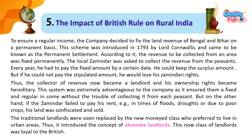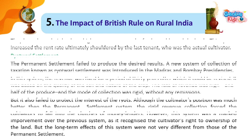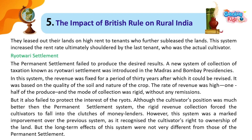But on the other hand, if the zamindar failed to pay his rent — for example, in times of floods, droughts, or due to poor crops — his land was confiscated and sold. The traditional landlords were soon replaced by a new moneyed class who preferred to live in urban areas, thus introducing the concept of absentee landlords. This new class of landlords was loyal to the British. They leased out their lands on high rent to tenants who further subleased the lands, increasing the rent rate ultimately shouldered by the last tenant, who was the actual cultivator.